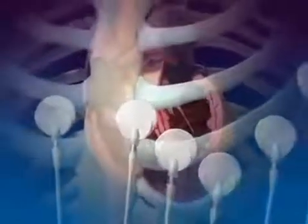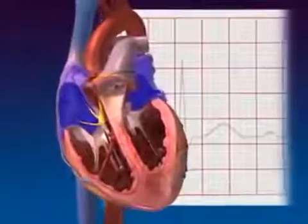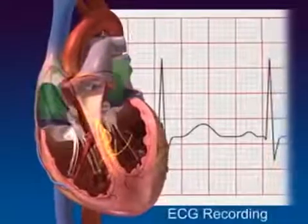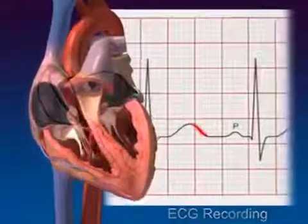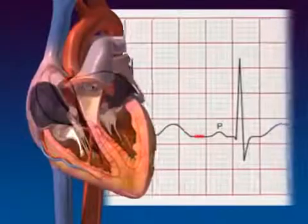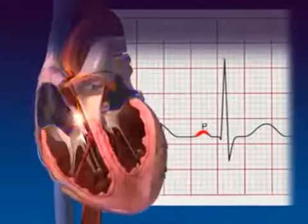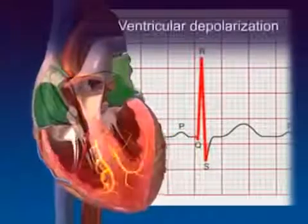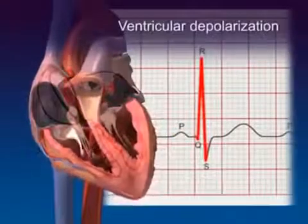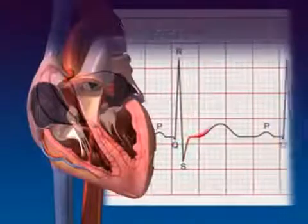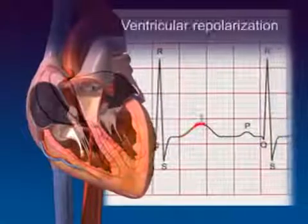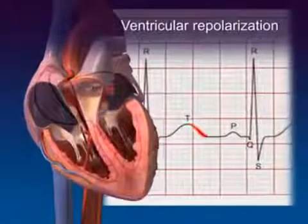The spread of cardiac electrical activity may be recorded using electrodes placed on the body's surface. The recording, called the electrocardiogram, or ECG, has several distinct components. The P-wave corresponds to atrial depolarization. The QRS complex appears with ventricular depolarization. The T-wave represents ventricular repolarization.